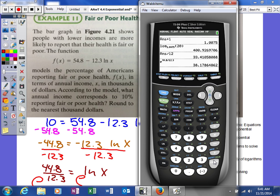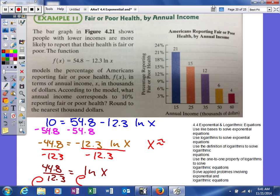So it says to round to the nearest thousands and since my answer's in terms of thousands, we're going to say it's going to be 38. So apparently an average income of thousands of dollars. So $38,000 will result in 10% of those people reporting fair or poor health.